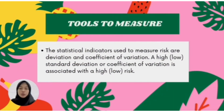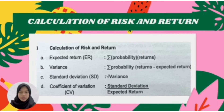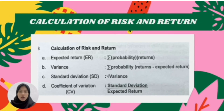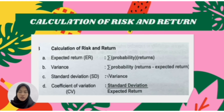Next is tools to measure risk. The statistical indicators used to measure risk are standard deviation and coefficient of variation. A high standard deviation or coefficient of variation is associated with high risk. The formulas for calculation of risk and return: first, expected return equals the sum of (probability × return). Second, variance equals the sum of probability × (return minus expected return) squared. Third, standard deviation equals the square root of variance. Lastly, coefficient of variation equals standard deviation divided by expected return.